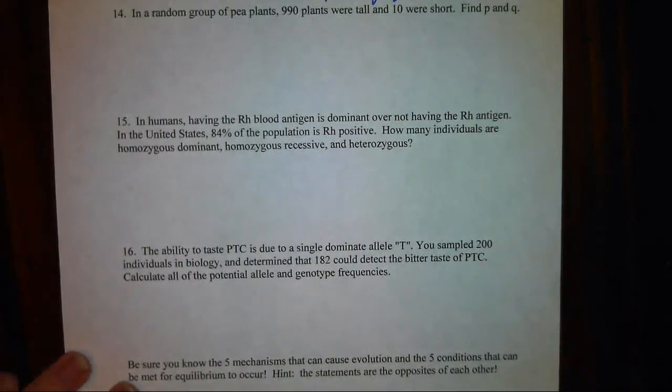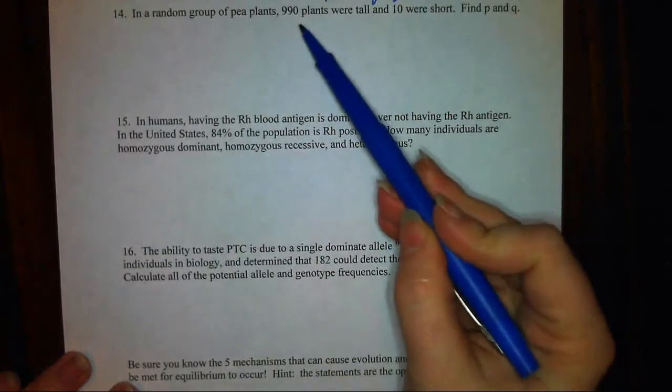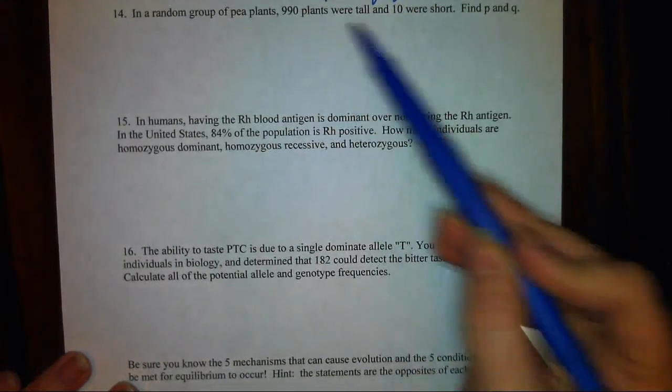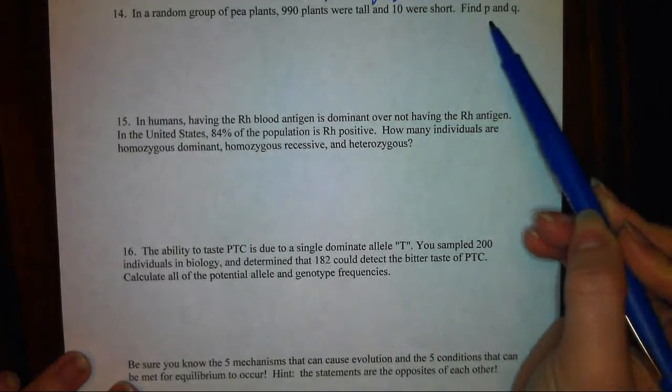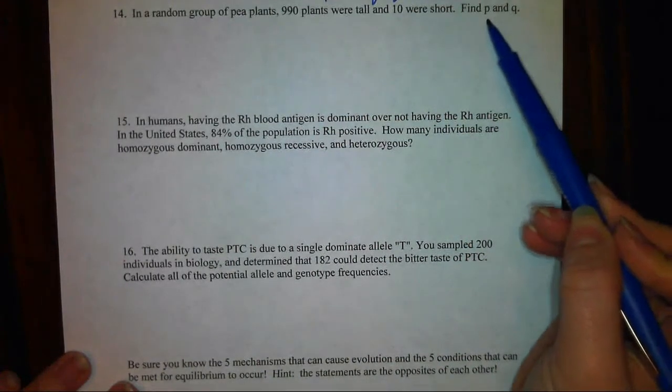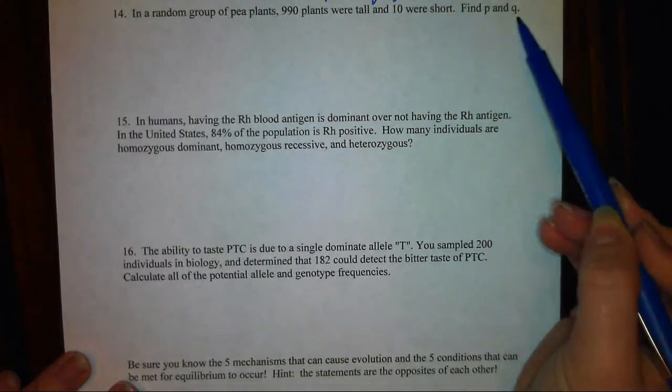Okay, my next Hardy-Weinberg problem is talking about a population of pea plants. It says there's 990 plants that are tall, 10 are short, and it wants us to find the allele frequencies. In other words, it wants us to find the percentage of the alleles that are dominant versus recessive.